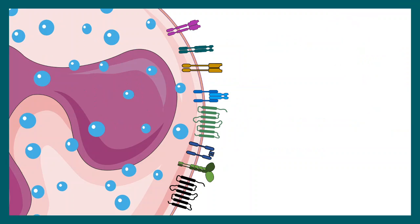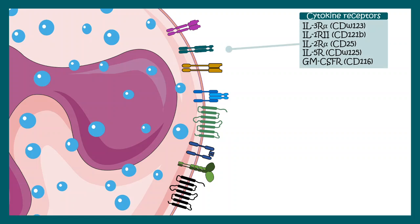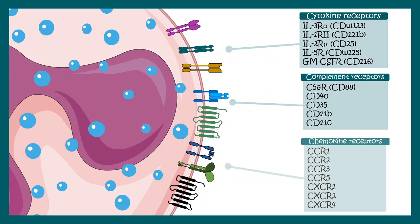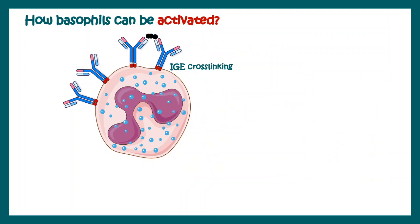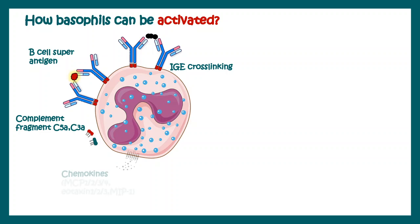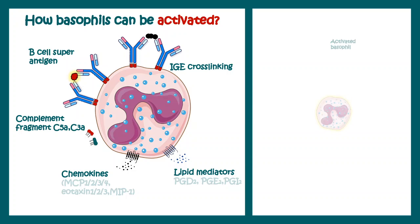There are many surface receptors present on the basophil, which broadly fall into the categories of cytokine receptors, complement receptors, and chemokine receptors. Basophils can be activated in many ways, such as IgE cross-linking, B-cell superantigen-mediated activation, complement fragment-mediated activation, chemokine-mediated activation, or lipid mediators like prostaglandins.